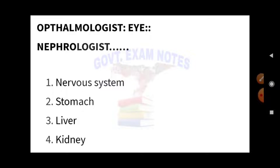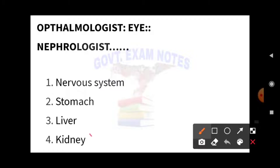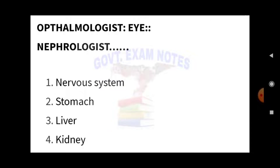The first question is from the reasoning section. It says: if ophthalmologist is to eye, then what will be the nephrologist? The ophthalmologist is the doctor of eyes — the study of eyes is called ophthalmology. So if ophthalmologist is the doctor for eyes, then nephrologist is the doctor for kidney. The science that deals with kidney diseases is called nephrology, and the doctor is called nephrologist.